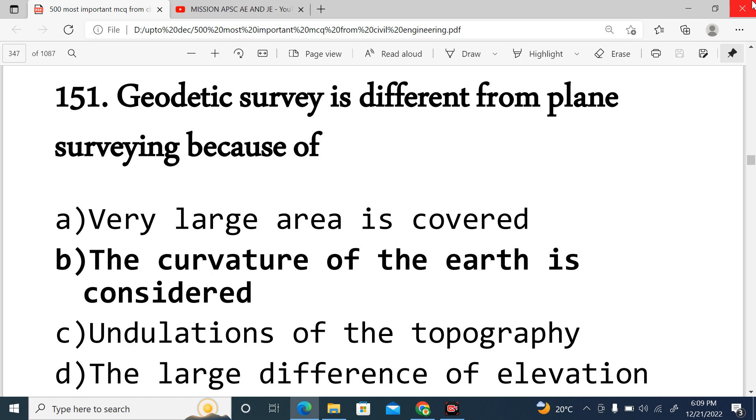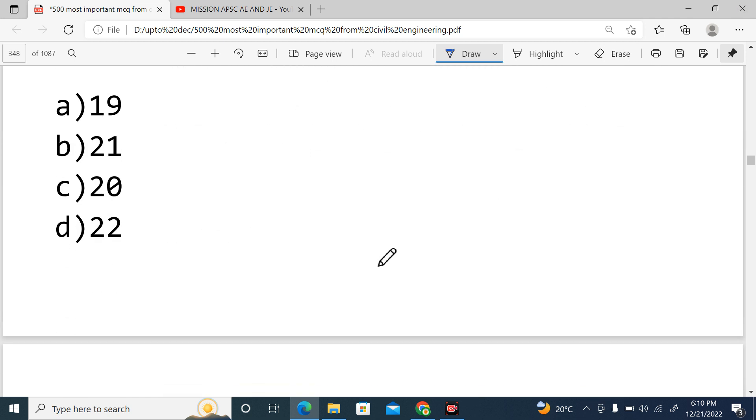This question is coming from basically surveying point of view. So here, what is geodetic survey? Mainly geodetic survey is nothing but earth surface or curved survey. So we have two types of survey based on curvature. If you consider the curvature, then we can say it is geodetic survey. If you don't consider the curvature, then we say it is plane survey.